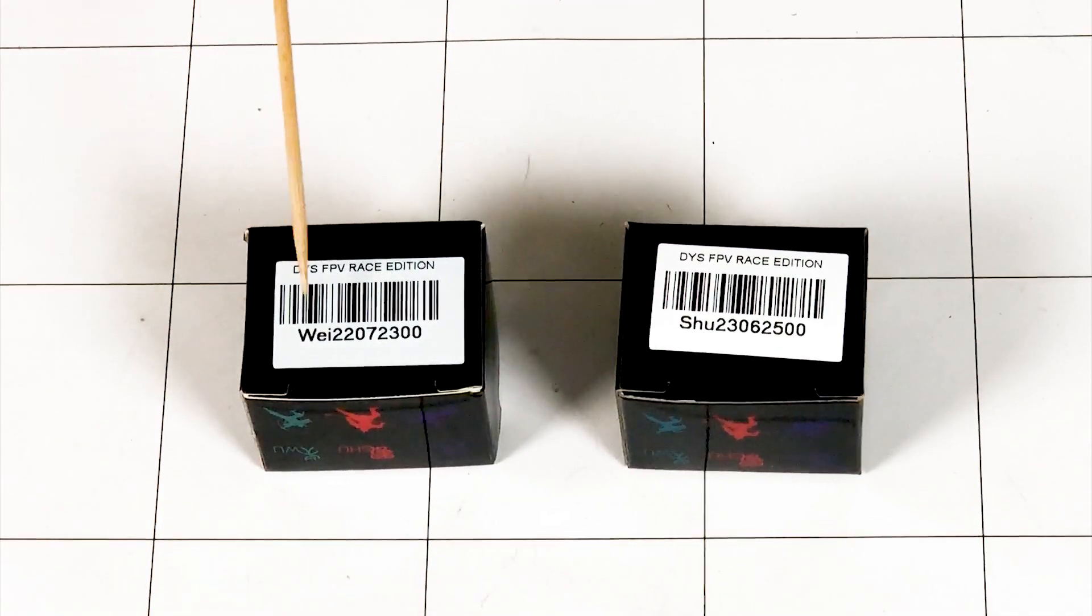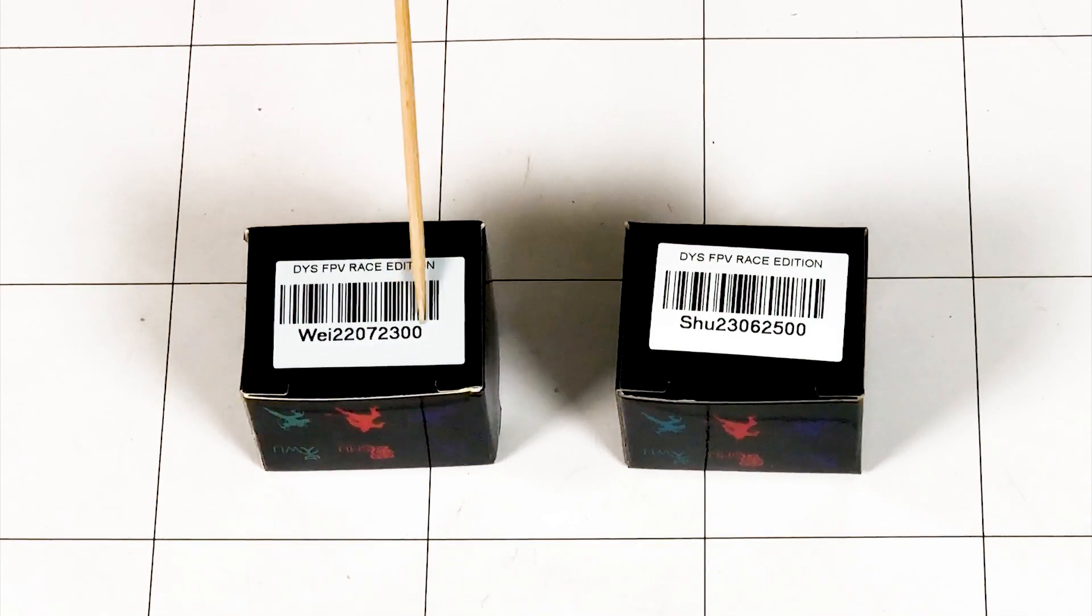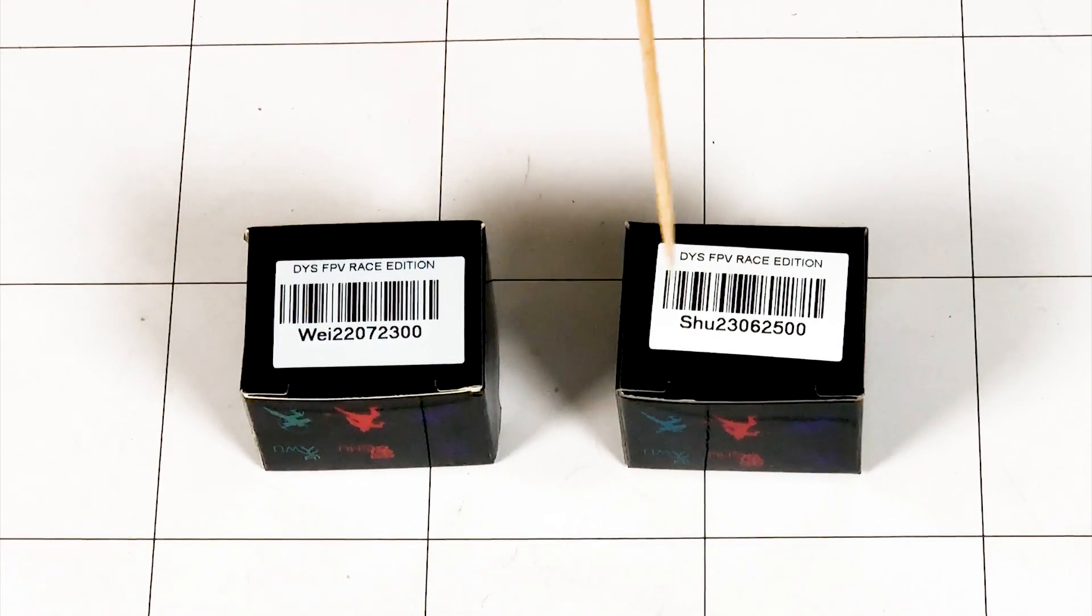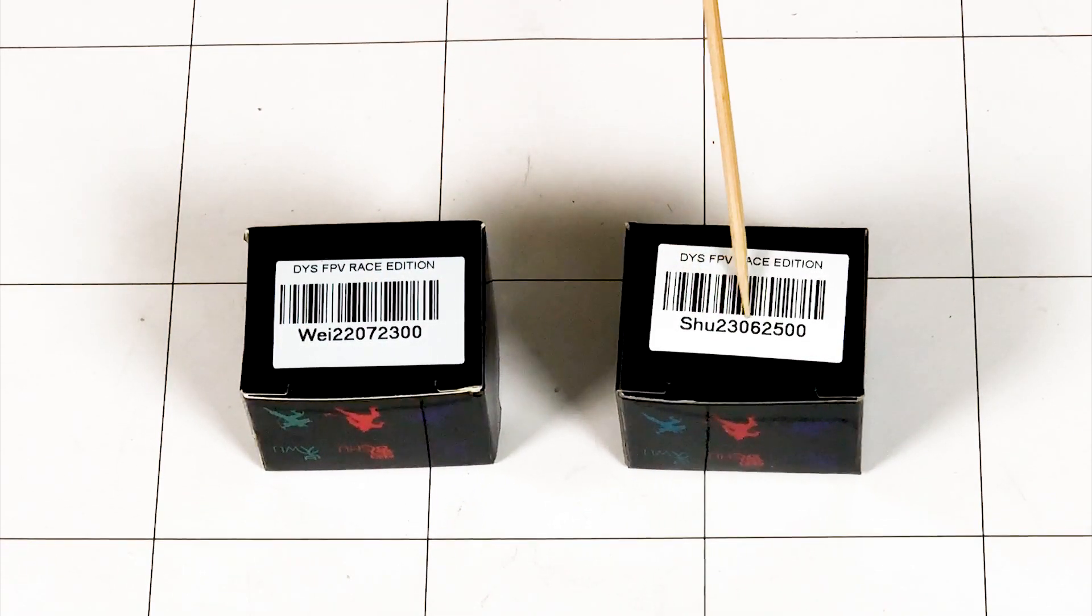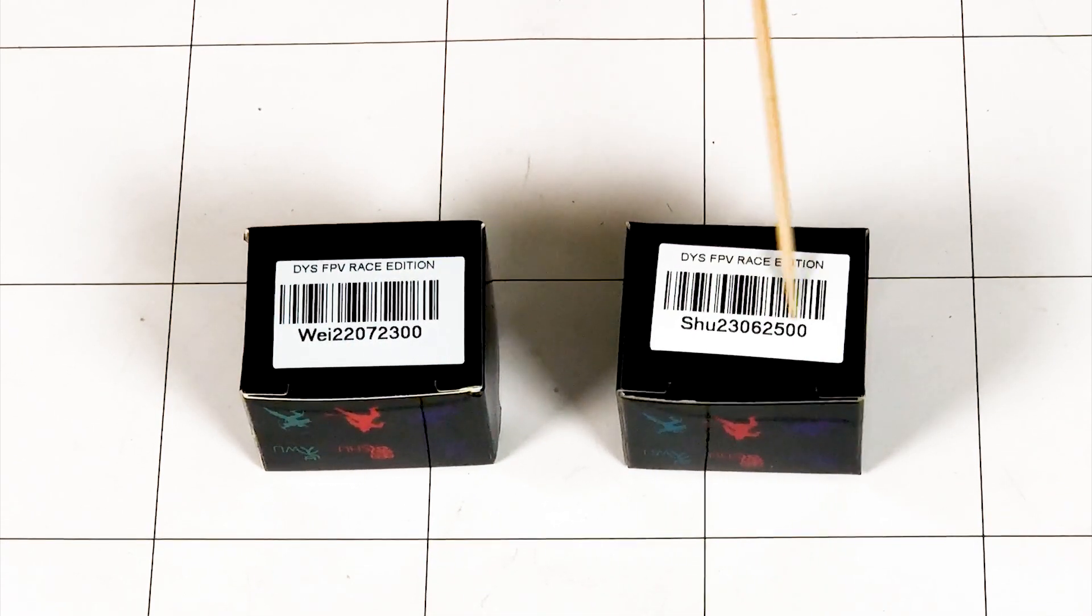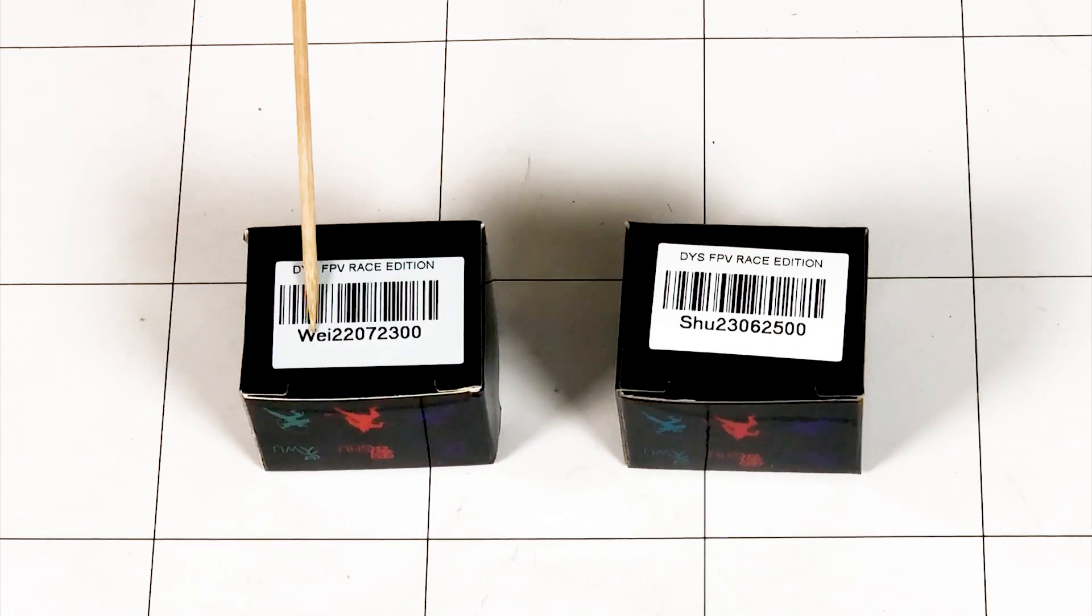And this is where we begin the unboxing and review section of the video. Alright, so on your left, my right, we have our Wii motor. It is the 2207, so it's 22mm wide by 7mm tall, and it's a 2300KV, which is the lower of the KVs in the Wii series.